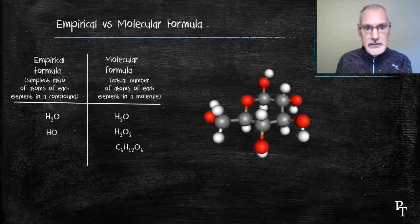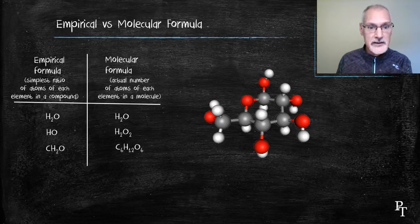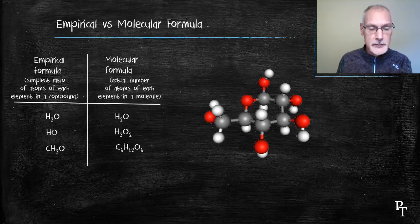Another example, glucose, C6H12O6. Reducing it to simplest terms gives me the formula CH2O. So again, there would be a difference between their empirical and molecular formulas.